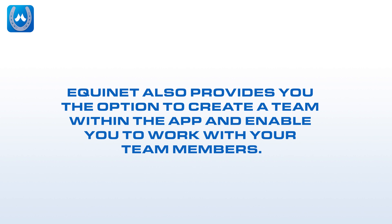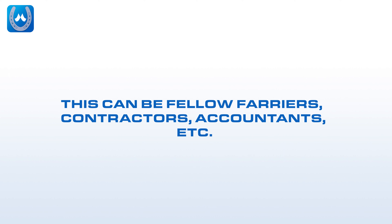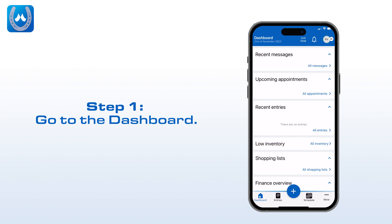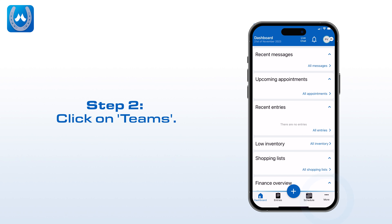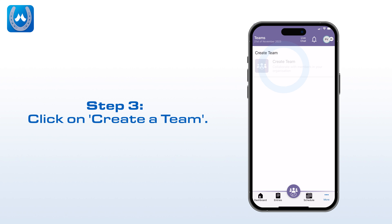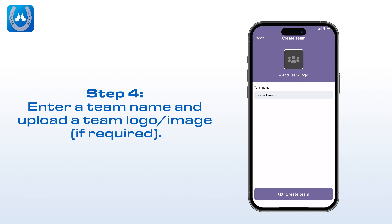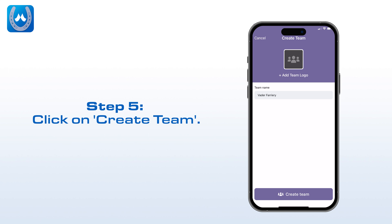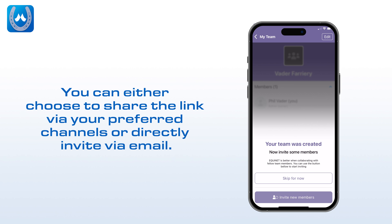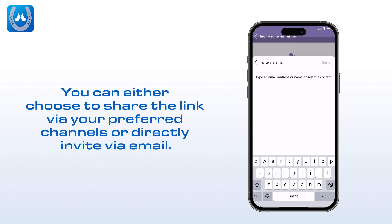Equinet also provides you the option to create a team within the app and enable you to work with your team members — this can be fellow farriers, contractors, accountants, etc. Follow these steps to create your team and invite members. Step 1: Go to the dashboard. Step 2: Click on Teams. Step 3: Click on Create a Team. Step 4: Enter a team name and upload a team logo image if required. Step 5: Click on Create a Team. Step 6: Click Invite New Members. You can either choose to share the link via your preferred channels or directly invite via email.